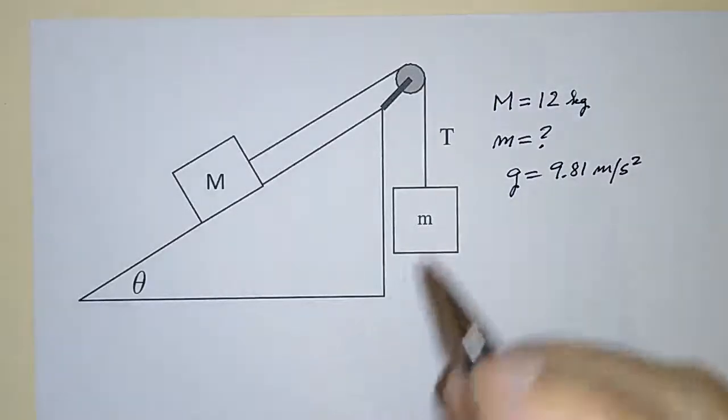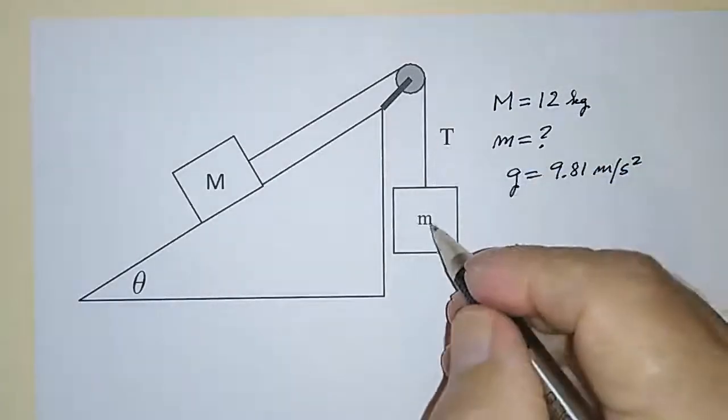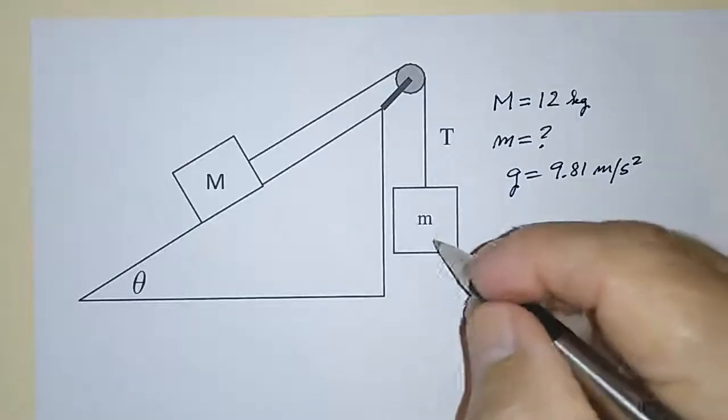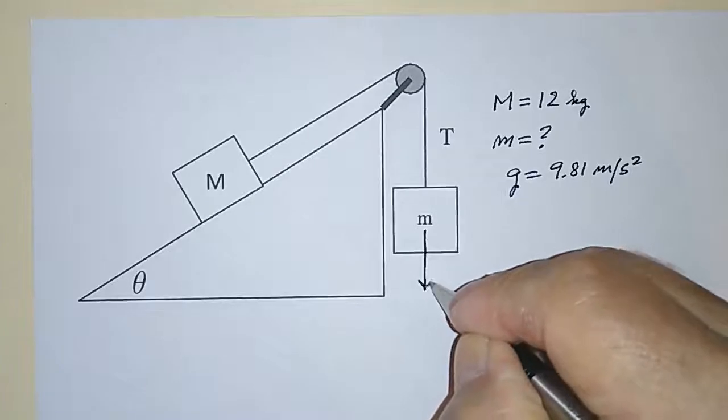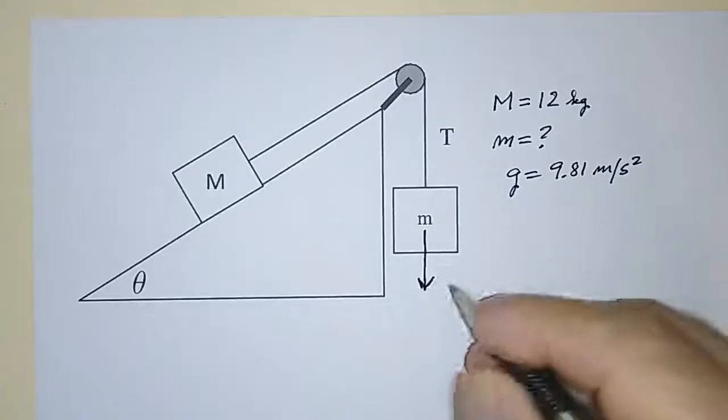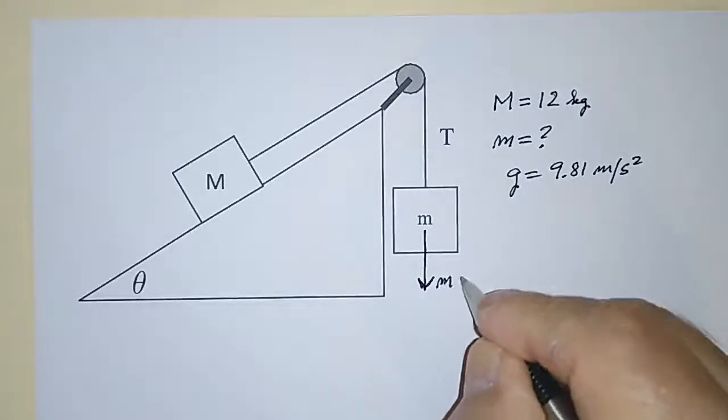First of all, the mass, little m, is acted upon by gravity, and we can draw a little vector like this, representing the force due to gravity, and I'm going to call that mg.